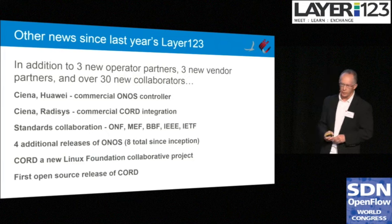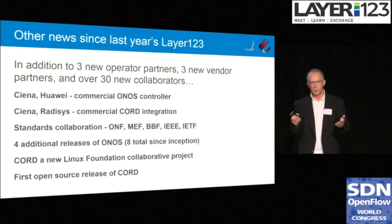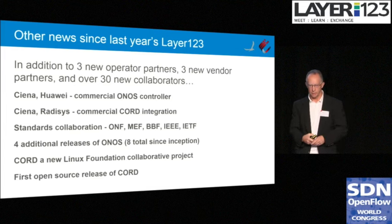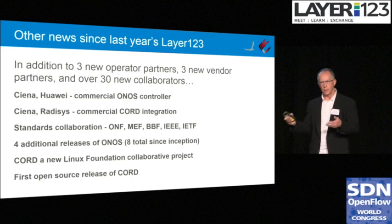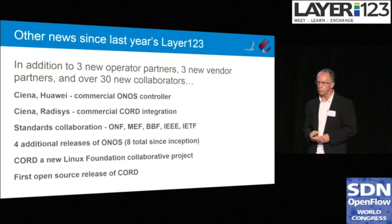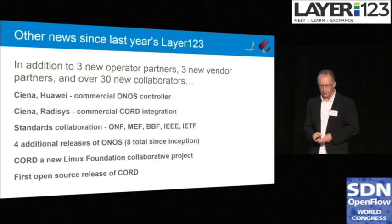A little bit of other news since last year at Layer 1 2 3: in addition to new partners and collaborators, Ciena and Huawei have both come out with commercial ONOS controllers, so now you have a place to get support in a Red Hat-like fashion. On the CORD side, Ciena and RealAssist are commercial CORD integrators. We've initiated work with standards organizations around evolving open source software together with standards. We've done four additional releases of ONOS — eight total since the project started — and CORD moved to being its own Linux Foundation collaborative project with its first open source release.